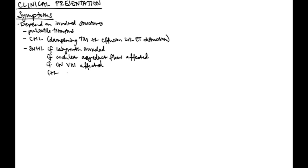In thinking about the clinical presentation of jugulotympanic paragangliomas, the symptoms really depend on which structures are involved. The most common symptom is pulsatile tinnitus. Second most common would be a conductive hearing loss. Conductive hearing loss can be caused by dampening the tympanic membrane because the mass is up against it, or there can be an associated effusion from a eustachian tube obstruction by the mass. Sensorineural hearing loss can occur if the labyrinth is invaded, if the cochlear aqueduct flow is affected, if cranial nerve 8 itself is affected, and any of these components may or may not also have comorbid vestibular symptoms.